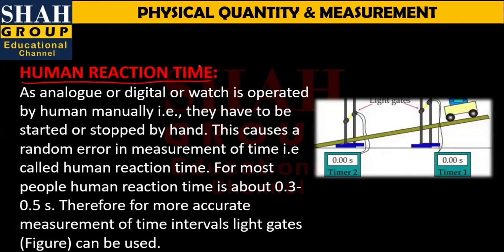The next topic is Human Reaction Time. Let me explain with an example before the definition. As you can see in the diagram, there are two positions — a car enters at position A and exits at position B. This works like a stopwatch. During an experiment, like with a simple pendulum, you reset, start, and stop the stopwatch and then measure the time.